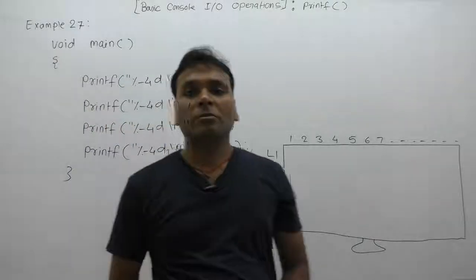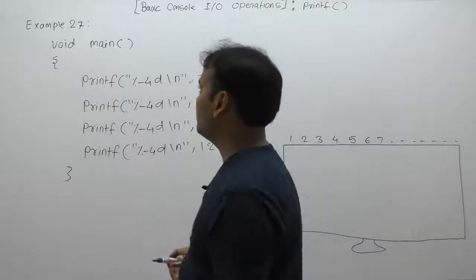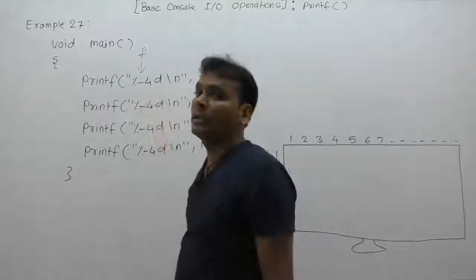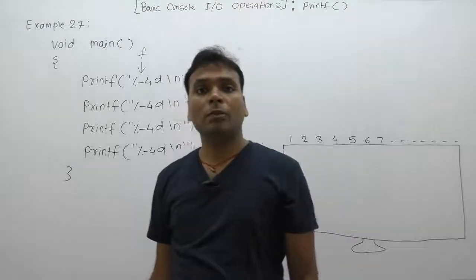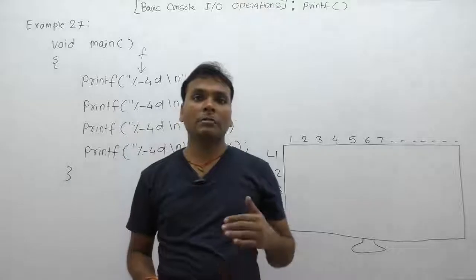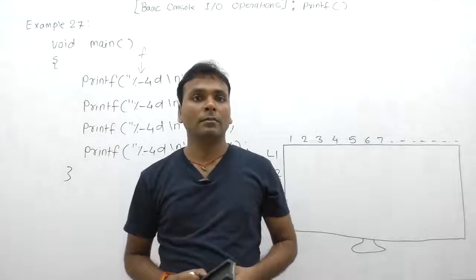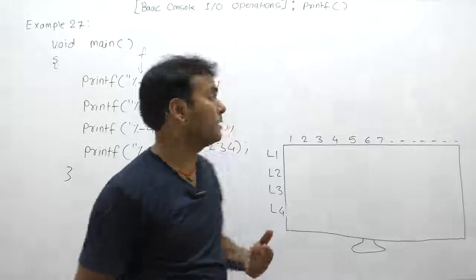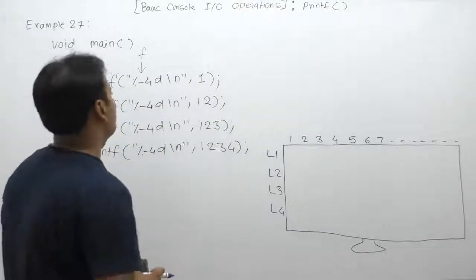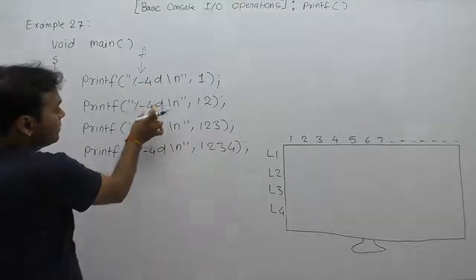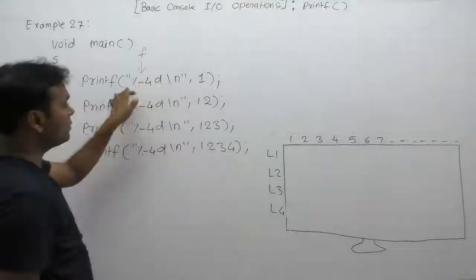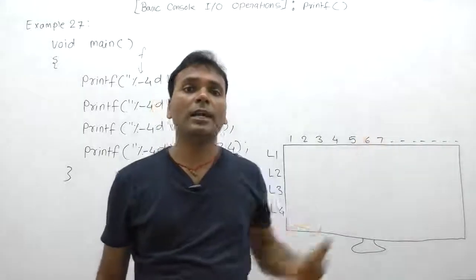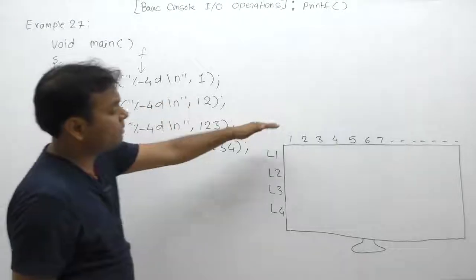This example is almost similar to example 26, but here we are supplying an extra flag: the minus symbol. According to this flag, by default numbers are displayed right-justified, but using the minus sign we can display any number left-justified. Here spaces will be filled on the right position, not the left. Minus four is simply equivalent to percent-d in default cases.